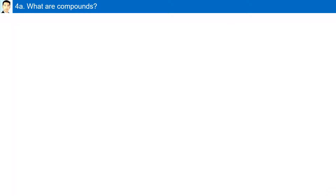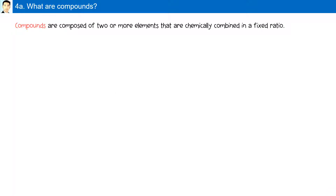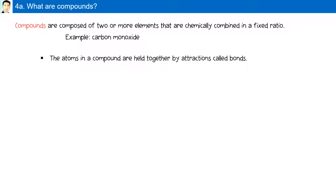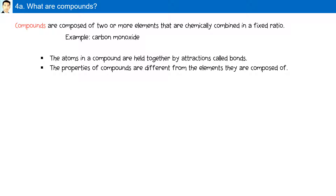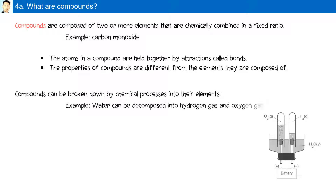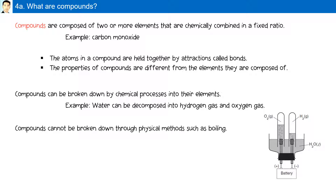What are compounds? Compounds are composed of two or more elements that are chemically combined in a fixed ratio — for example, carbon monoxide. The atoms in a compound are held together by attractions called bonds. The properties of compounds are different from the elements they are composed of. Compounds can be broken down by chemical processes into their elements; for example, water can be decomposed into hydrogen gas and oxygen gas. Compounds cannot be broken down through physical methods such as boiling.